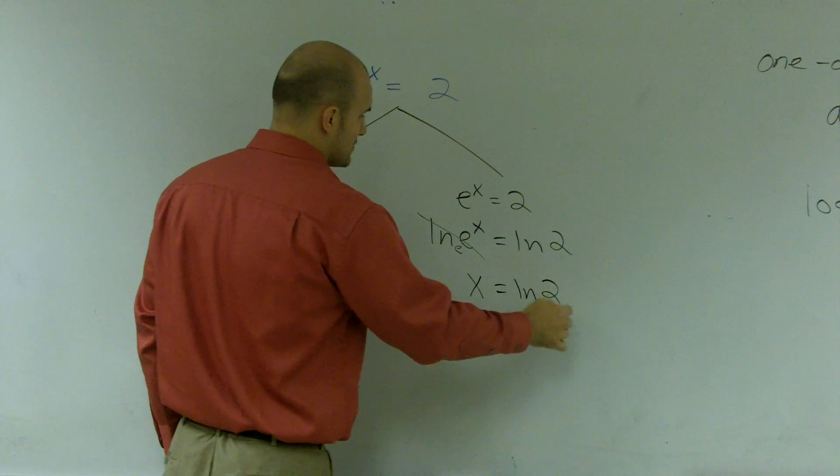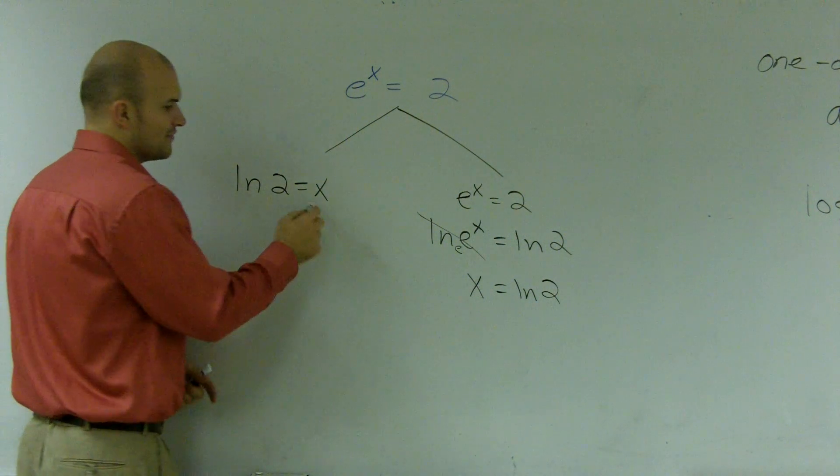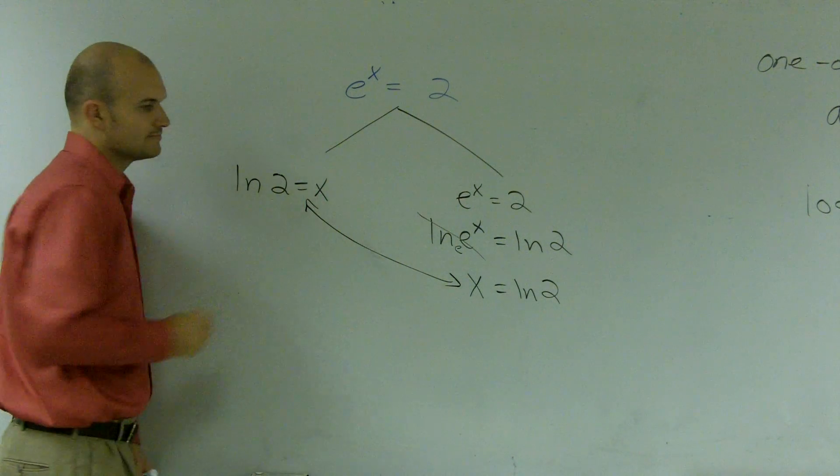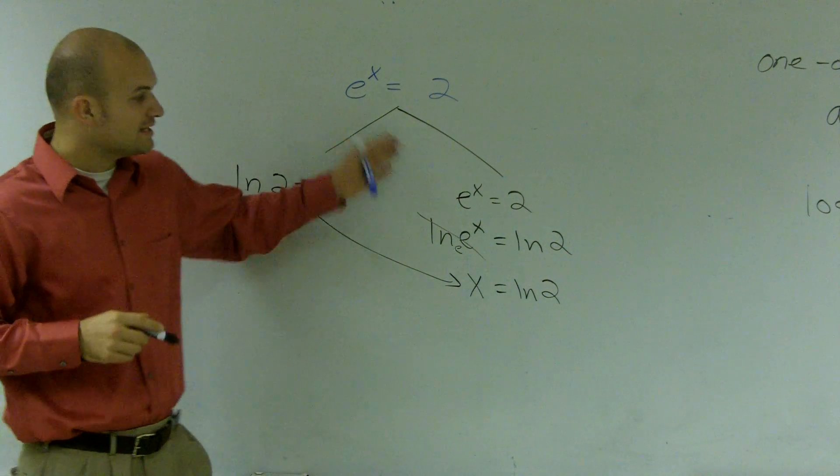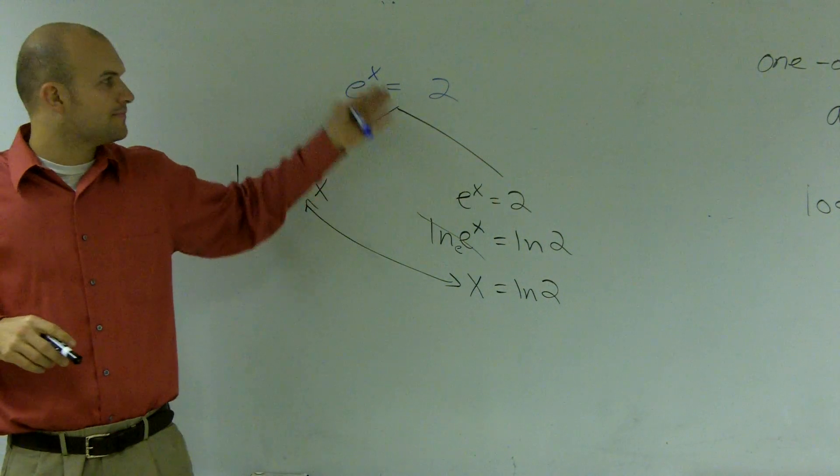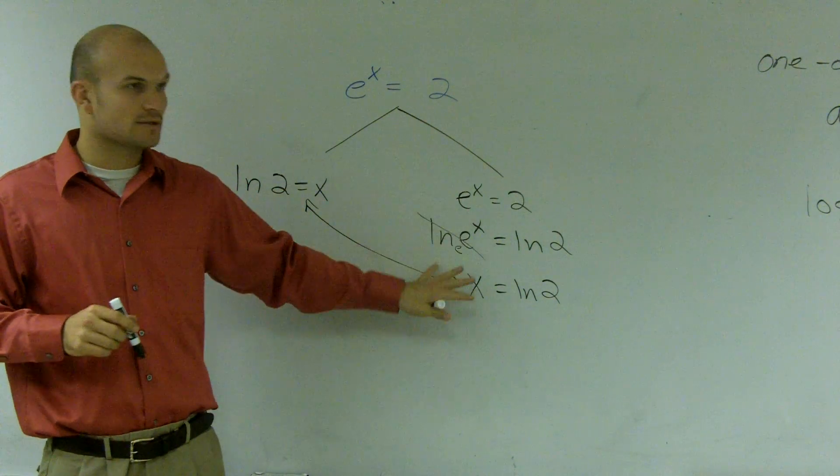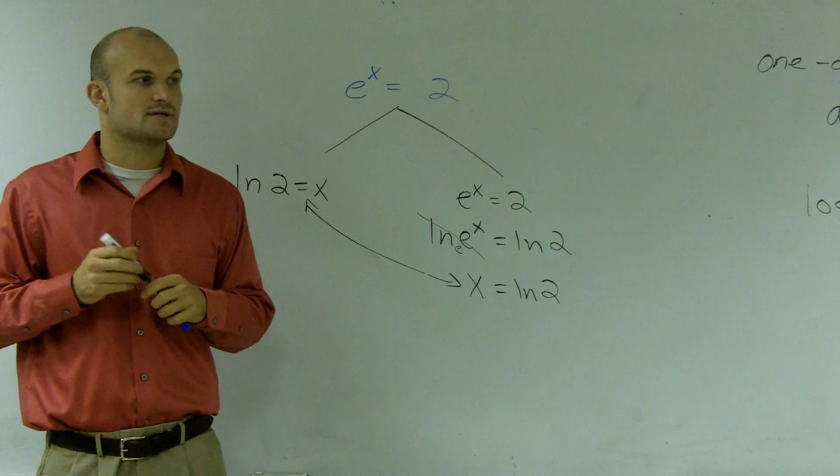So therefore, x equals ln of 2. So like I was telling you, there's two different ways to do it. Whichever way it kind of really makes sense to you. You do need to understand this method, because you're going to have more difficult problems that understand this method is going to be powerful of taking the log of both sides, the natural log of both sides.